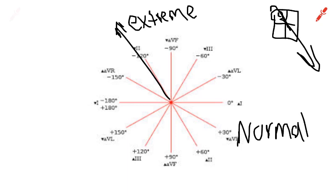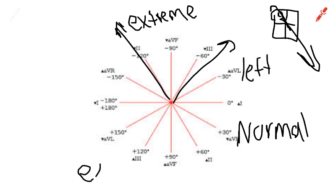If AVF was negative but Lead 1 was positive, that means it's going away from AVF — so AVF is negative — and going towards Lead 1 — so Lead 1 is positive. That would be right axis deviation. And essentially, that's how you find the axis deviation.